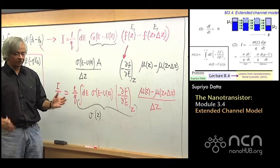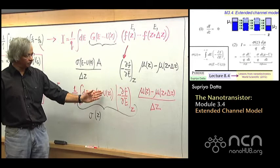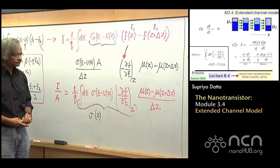So you're integrating over energy, and finally you get a number that doesn't depend on energy anymore — it's one number. But the number you get could be changing from one point in the channel to another, actually varying with Z. So that's the sigma of Z — the effective conductivity at point Z.